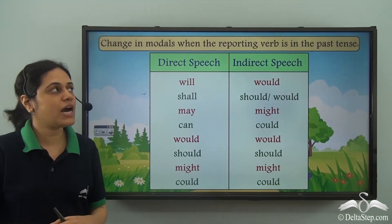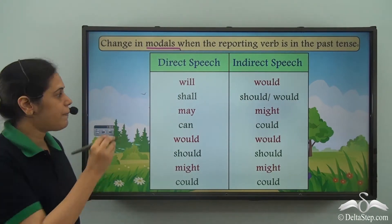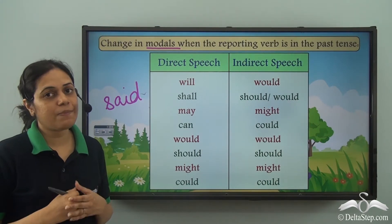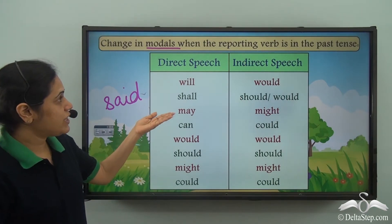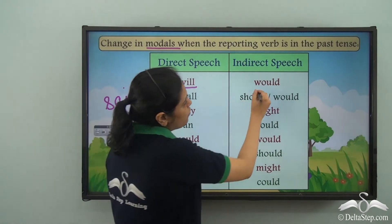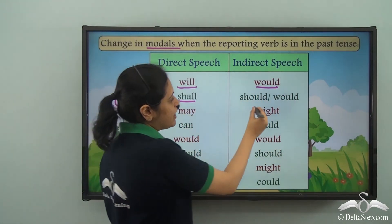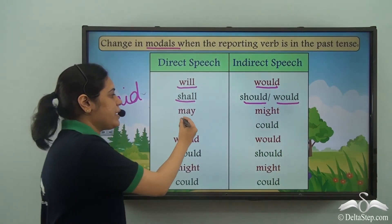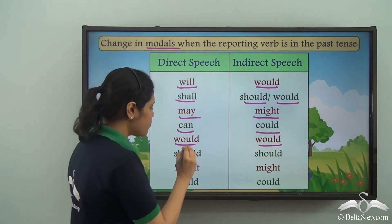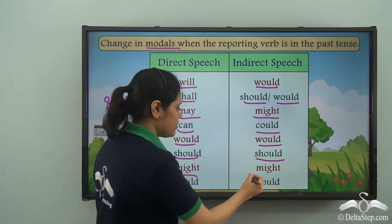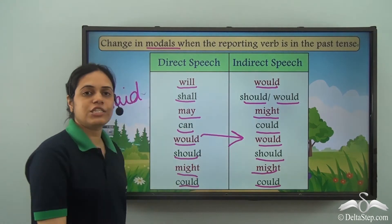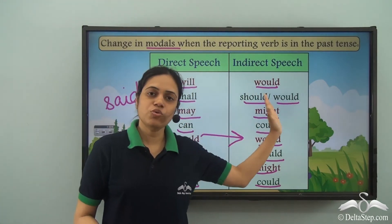This is how the modal changes when the reporting verb is in the past tense — that is, when the reporting verb is 'said'. If the reporting verb is in the present tense, there is no change in the modal. Summary: 'will' becomes 'would', 'shall' becomes 'should' or 'would', 'may' becomes 'might', 'can' becomes 'could', while 'would', 'should', 'might', and 'could' all remain the same.